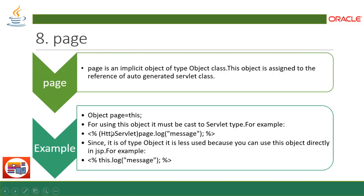`page` is an implicit object of type Object class, assigned to the reference of the auto-generated servlet class. Since Object is the base class of Java, when working with it you initialize and create an instance. It is basically used for getting log messages from the application — if you have an application that needs to get messages from the logging system, you can use this implicit object.